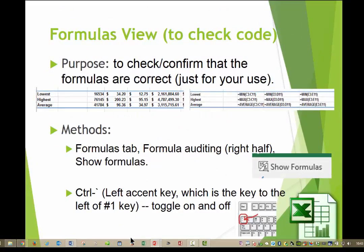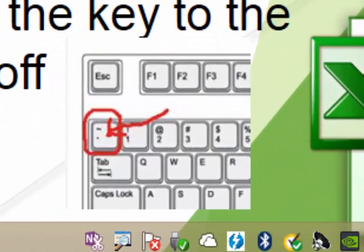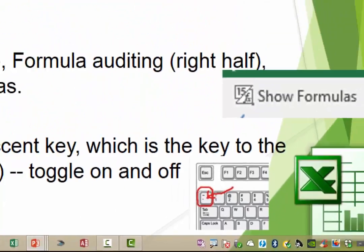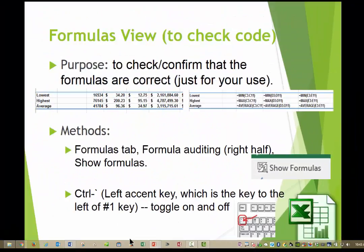The second method, this is the memorize method, is Control-Left-Accent, which is actually down there on the regular part of the keyboard to the left of the number 1 key. And you can use Control-Left-Accent to toggle the regular view and the formulas view on and off.